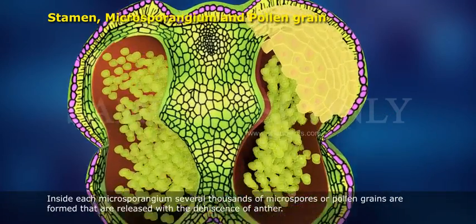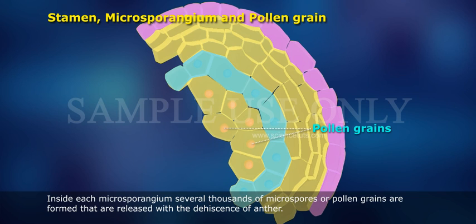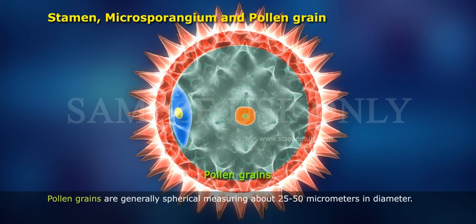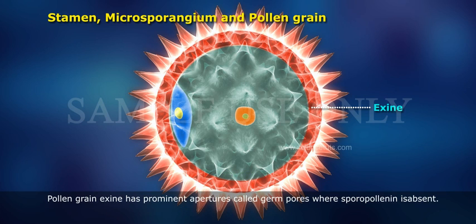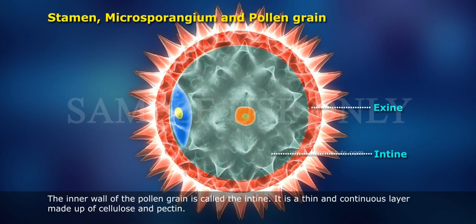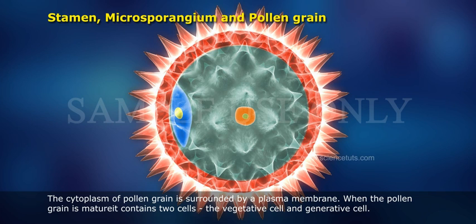Inside each microsporangium, several thousands of microspores or pollen grains are formed that are released with the dehiscence of the anther. Pollen grains are generally spherical, measuring about 25 to 50 micrometres in diameter. Each has a prominent two-layered wall. The hard outer layer called the exine is made up of sporopollenin, the most resistant organic material known. Pollen grain exine has prominent apertures called germ pores where sporopollenin is absent. The inner wall of the pollen grain is called the intine. It is a thin and continuous layer made up of cellulose and pectin. The cytoplasm of the pollen grain is surrounded by a plasma membrane.